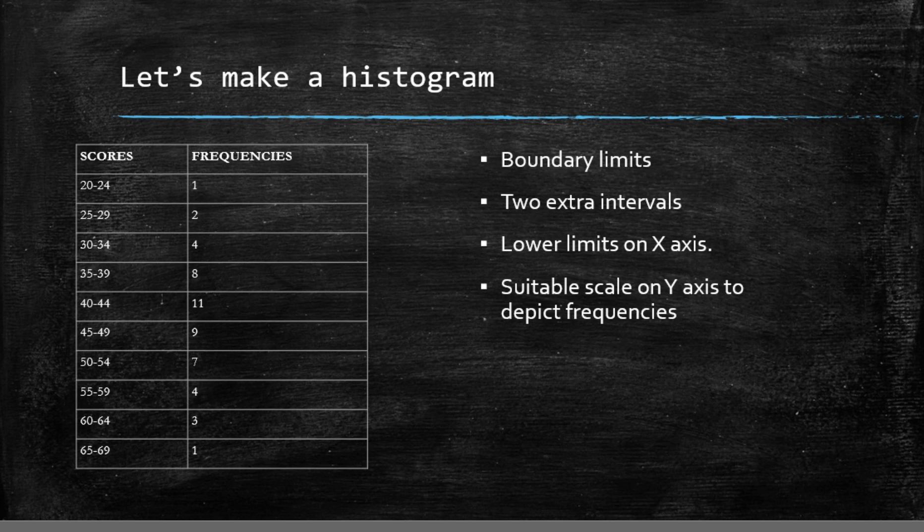Besides that we are going to create two extra classes with zero frequencies. One of these classes will be made the lowest class and the other one will be made the highest class. Hence in this table we will be adding the classes 14.5 to 19.5 and 69.5 to 74.5.